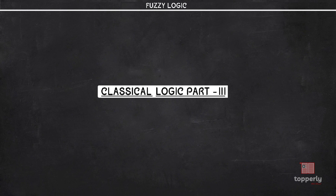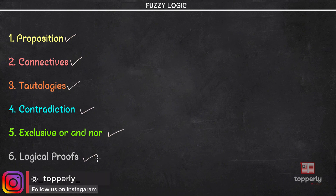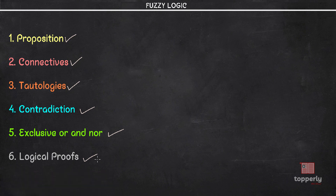Hey everyone, welcome back to fuzzy logic lectures. In the previous videos, we looked into different parameters of classical logic like proposition, connectives, tautologies, contradiction, exclusive or and not, and logical proofs. Next we have to go through fuzzy logic parameters. But before we move on to those parameters, let us revisit the concept of implication as per lecture number 13 of our fuzzy logic playlist.